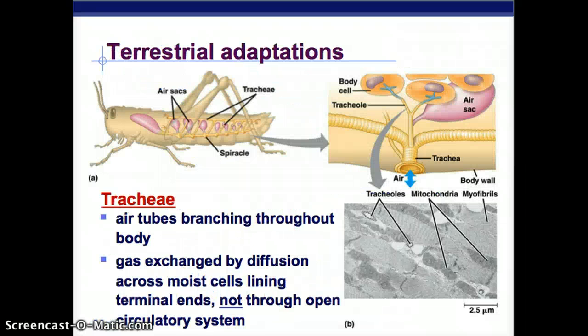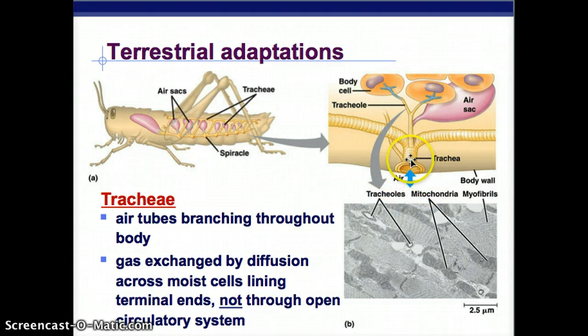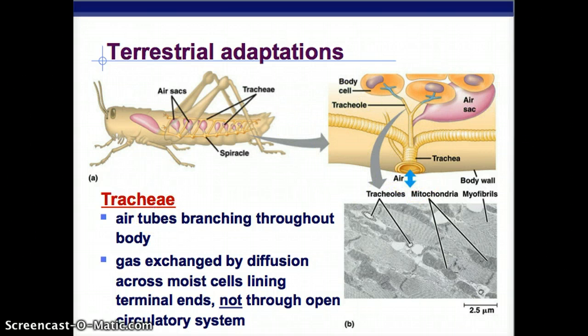Terrestrial adaptations: the grasshopper has spiracles - small openings - with trachea tubes connected to air sacs. Trachea are tubes that branch throughout the body, and gas is exchanged by diffusion across moist cells lining the terminal ends, not through an open circulatory system.